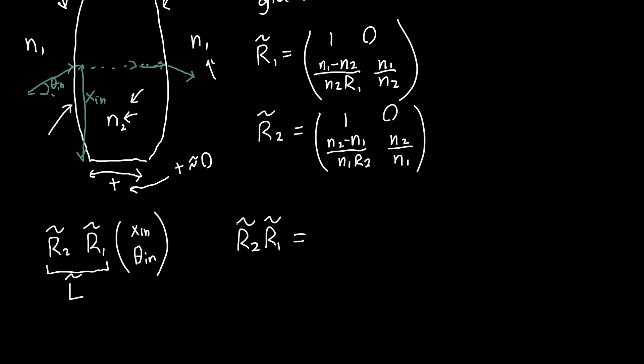We can just write down what that is and calculate it. Let's do that multiplication real quick. First we need the top row times the left column, so that would be one times zero times one, so one. Then top row second column: zero. Now the bottom row, and this is going to be the important one because this is the interesting one.